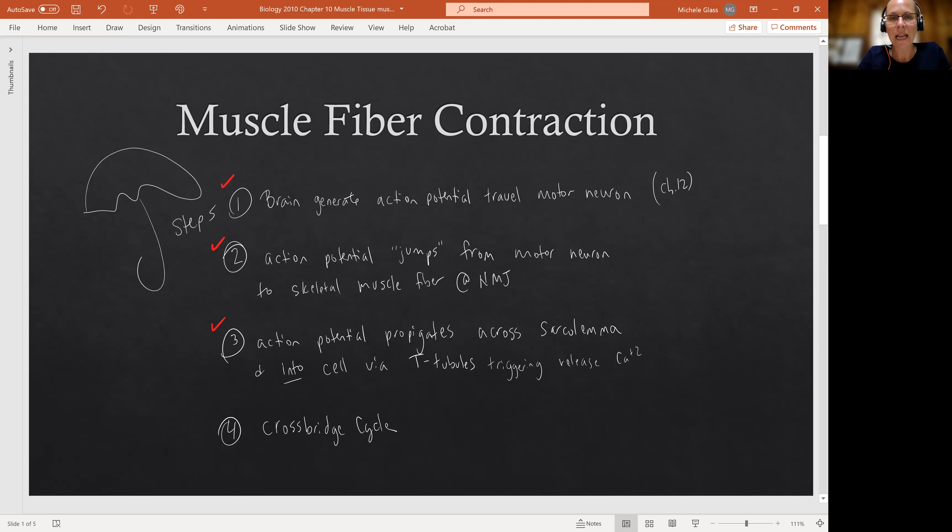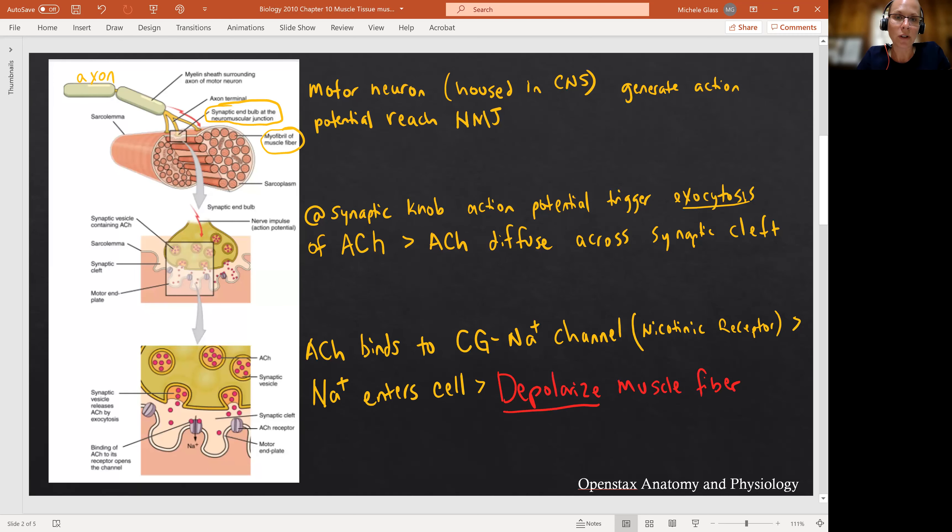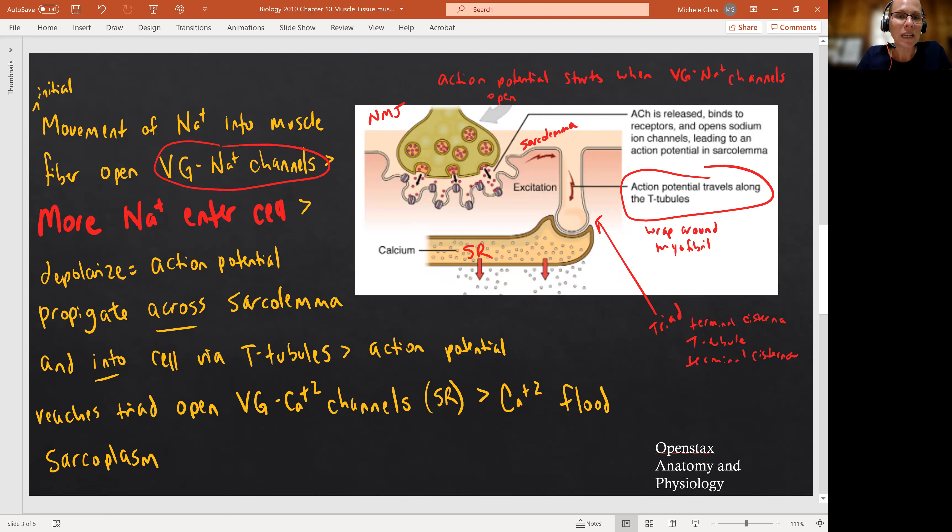We took a look at this diagram where we can see the details of what's going on at the neuromuscular junction. We talked through the signal reaching the end of the motor neuron. We saw that that triggers the exocytosis of the neurotransmitter acetylcholine. We saw acetylcholine diffusing across the synaptic cleft, binding to those chemically gated sodium channels that are part of the motor end plate, triggering that initial movement of sodium into the muscle fiber. And then after we get some of that initial movement of sodium into the muscle fiber, that triggers the opening of the voltage gated sodium channels, and we said that marks the beginning of that action potential.